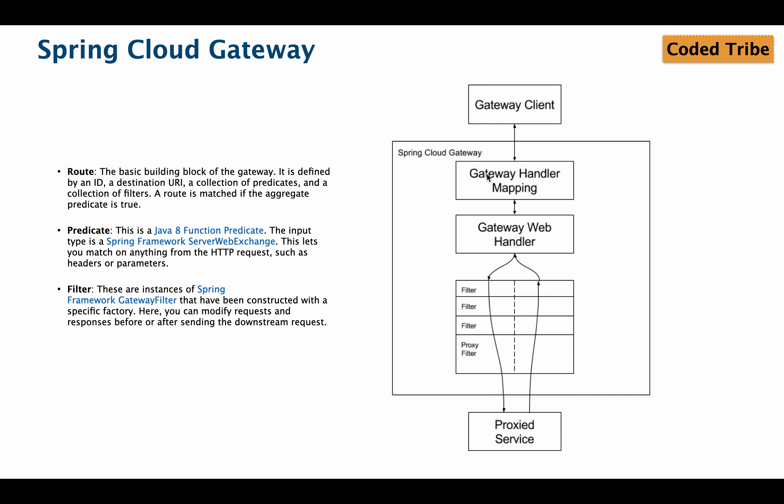Spring Cloud Gateway works as follows: the gateway client — a web browser, mobile app, or third-party application — sends a request. The gateway passes it to the gateway handler mapping, which reads the request path and checks whether it matches a configured route. If matched, it fetches the destination microservice URL, since the gateway knows the IP addresses and ports of all microservices.